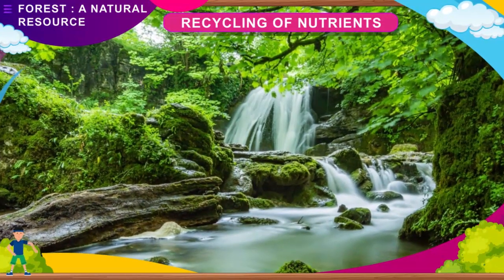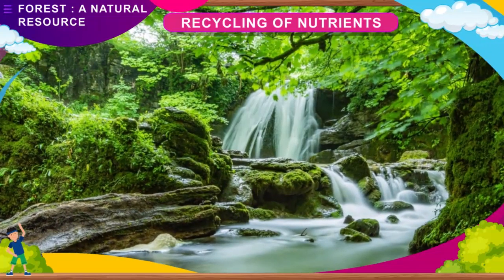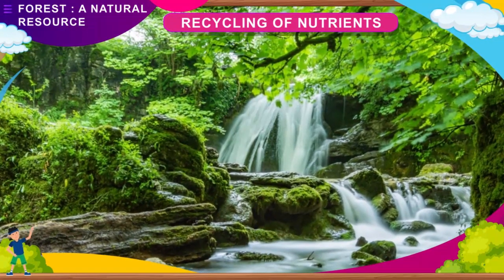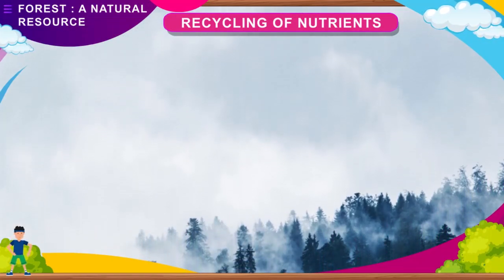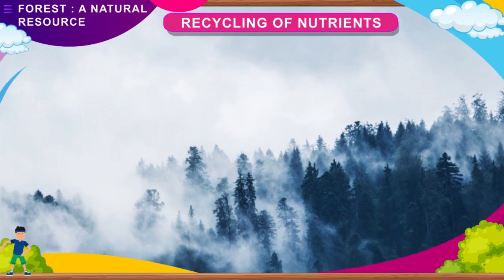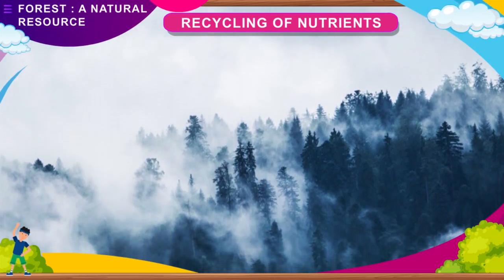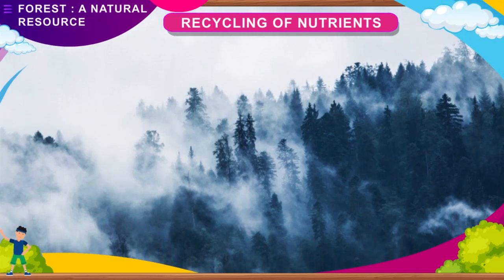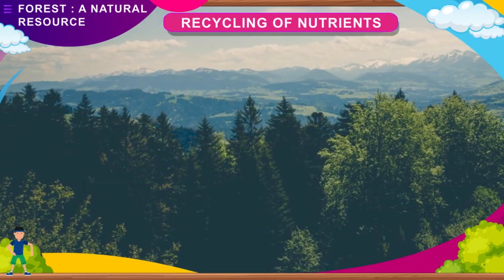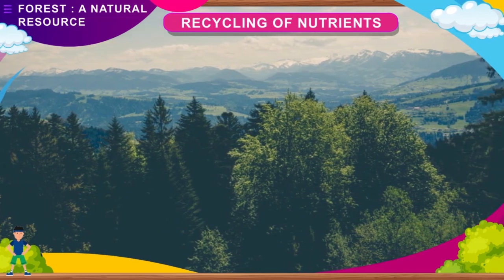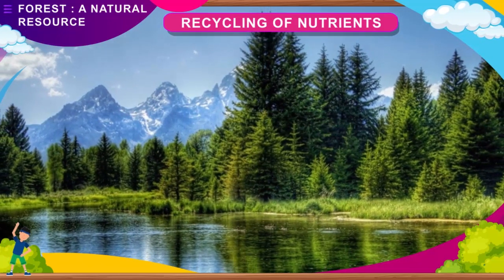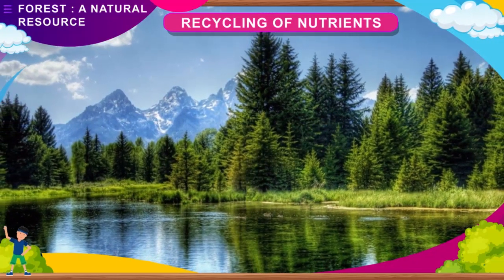Trees help in regulation of temperature by absorbing groundwater through their roots. This water is then released in the form of water vapour and helps in bringing rain. Plants in the forest absorb water from the soil and release it into the air through transpiration, increasing the amount of water vapour and helping in cloud formation. Trees also help in checking global warming by absorbing carbon dioxide, which is the main greenhouse gas. Some trees act as windbreakers on coastal areas.